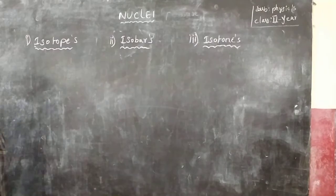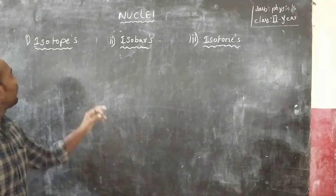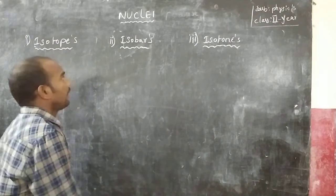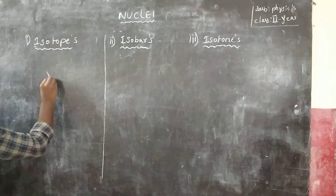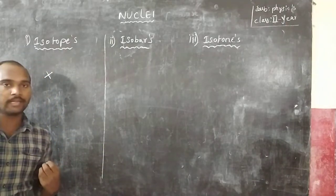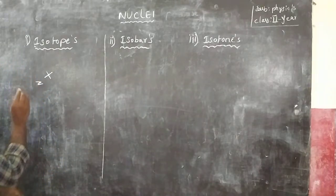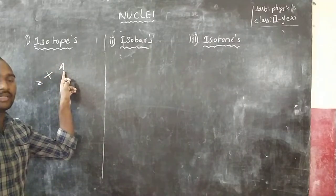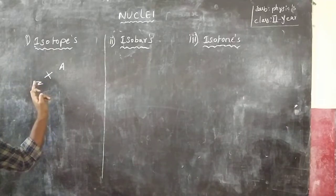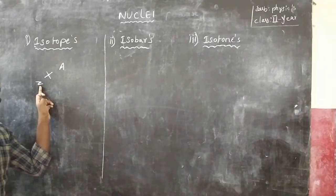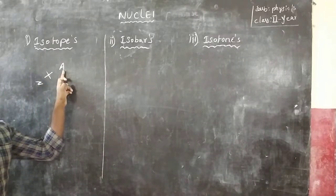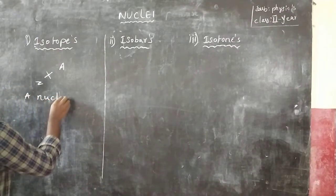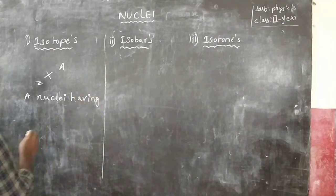Now let us discuss isotopes. A nucleus having the same proton number but a different mass number is called an isotope. So nuclei with the same atomic number but different mass numbers are called isotopes.